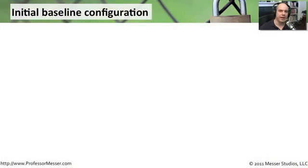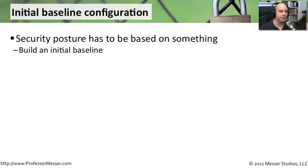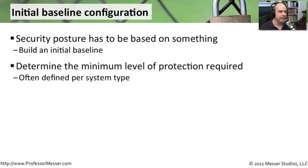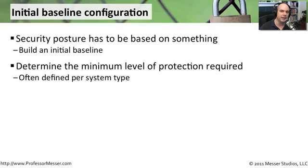When you're building out a security posture, it has to be based on something. So one of the first things you'll do is build an initial baseline of what you would like your security to be. This often takes a lot of planning and thought. You have to look at the requirements you have, the things that you need to protect. There's generally a minimum level of protection for the data and systems you have in place. Windows systems, Linux systems, different databases may all have different requirements, so you may be setting different baselines depending on the type of system.